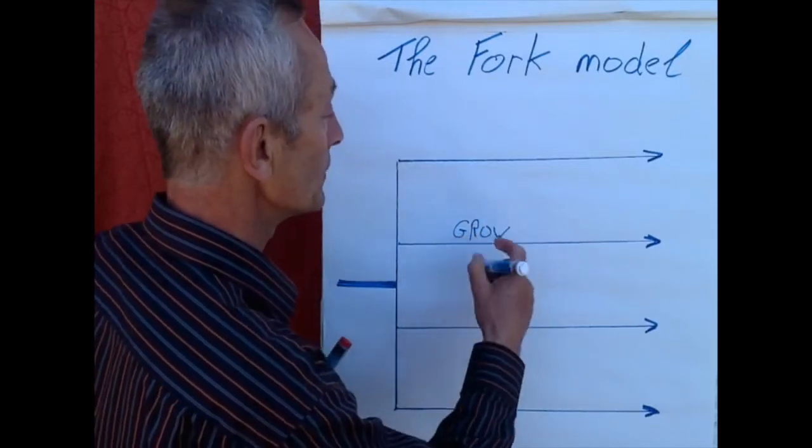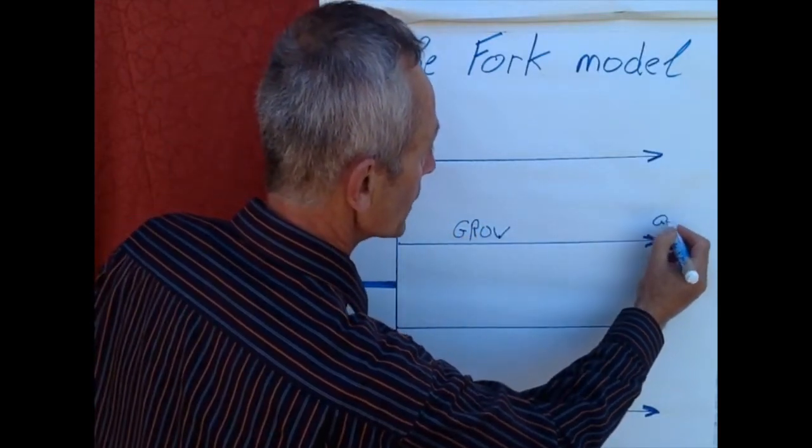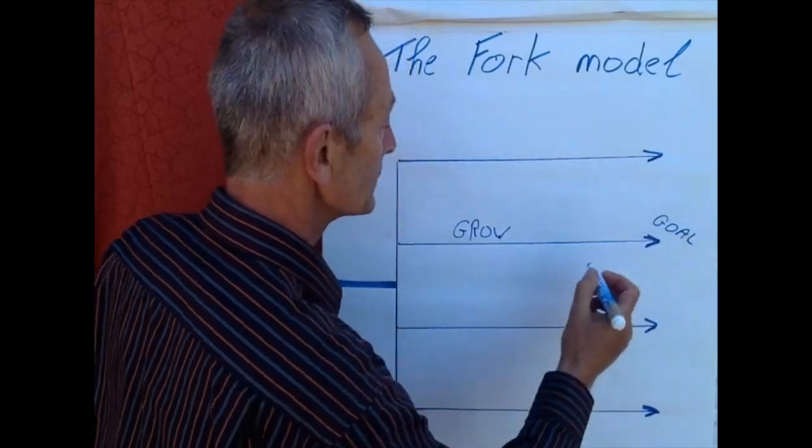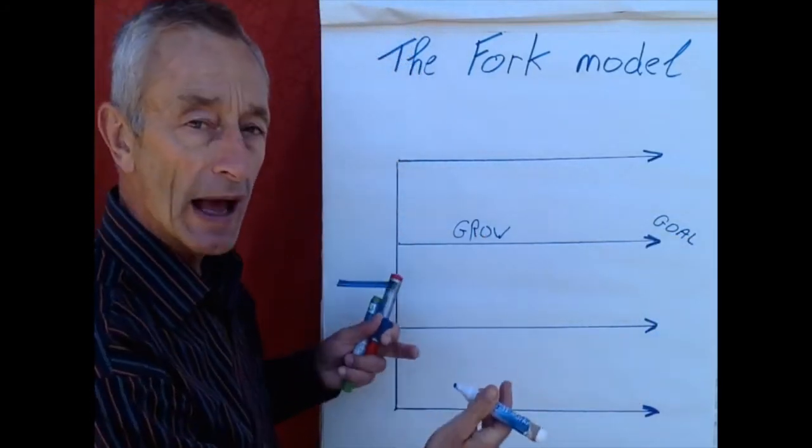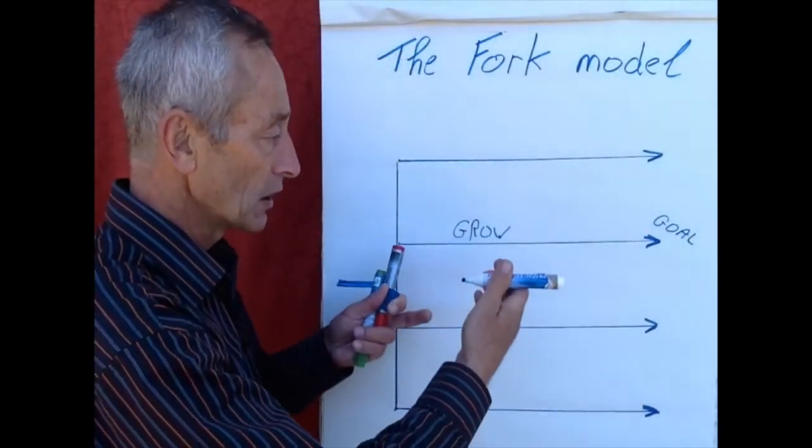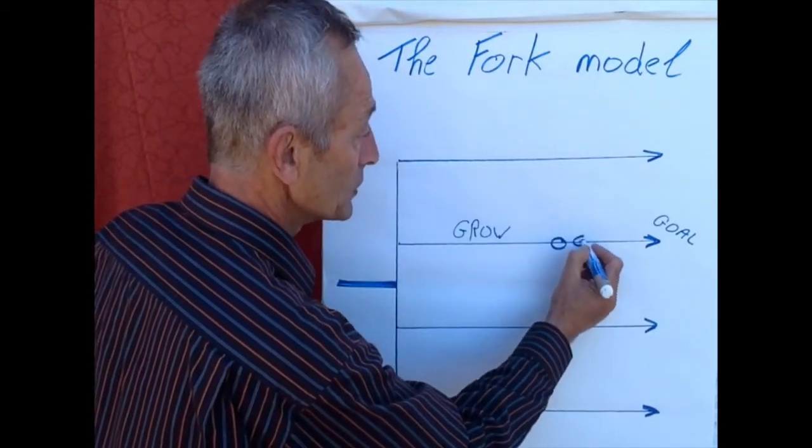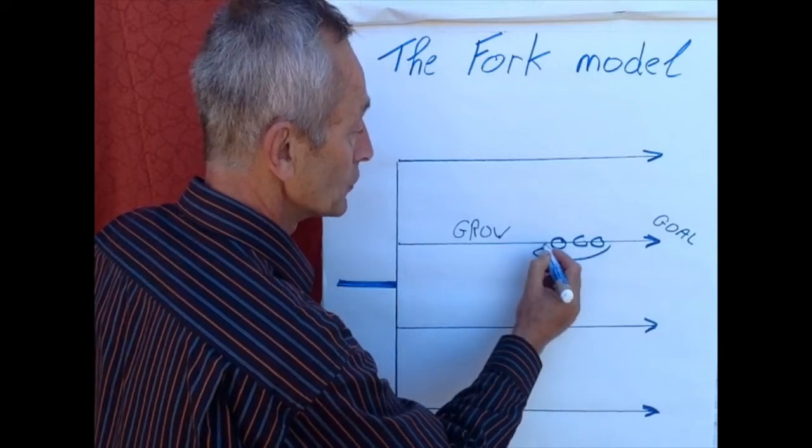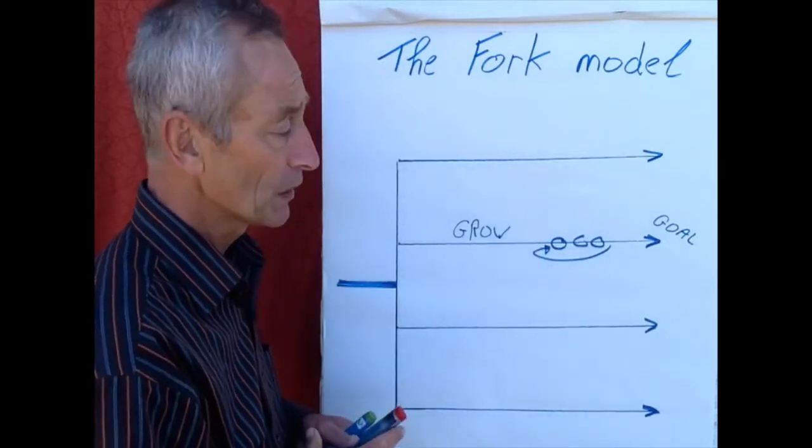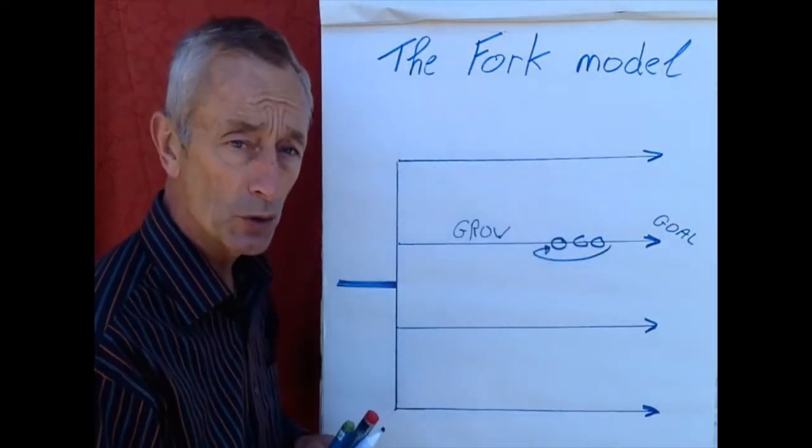GROW is an acronym for goal. You start with the goal, then go to the reality - where are you now? Then you brainstorm for actions and do the actions. With those actions, you achieve your goal and reflect on the feedback loops when you are doing the action.